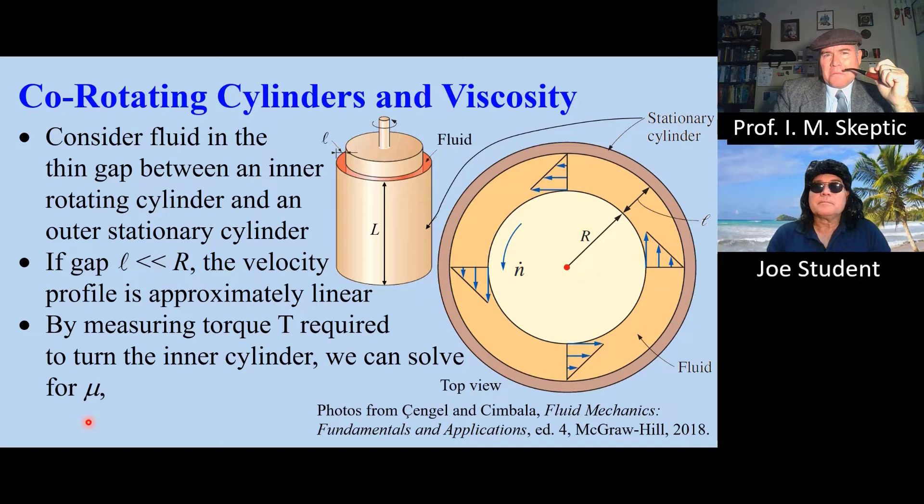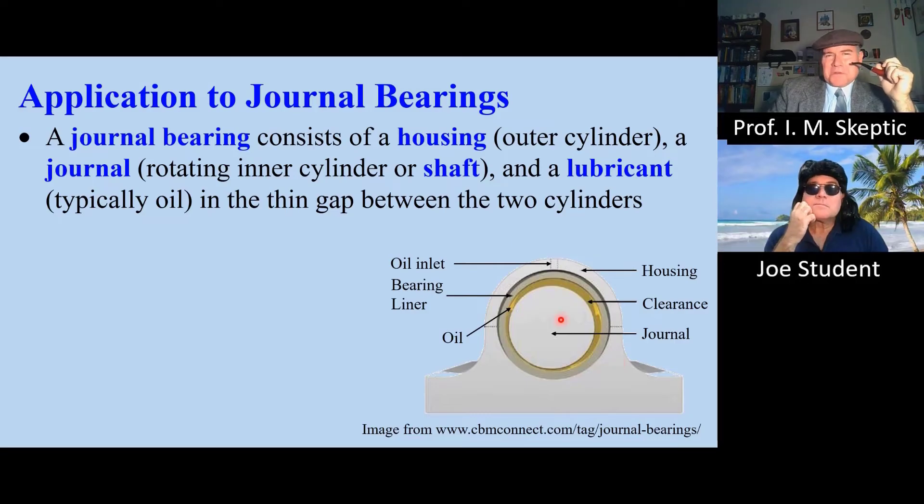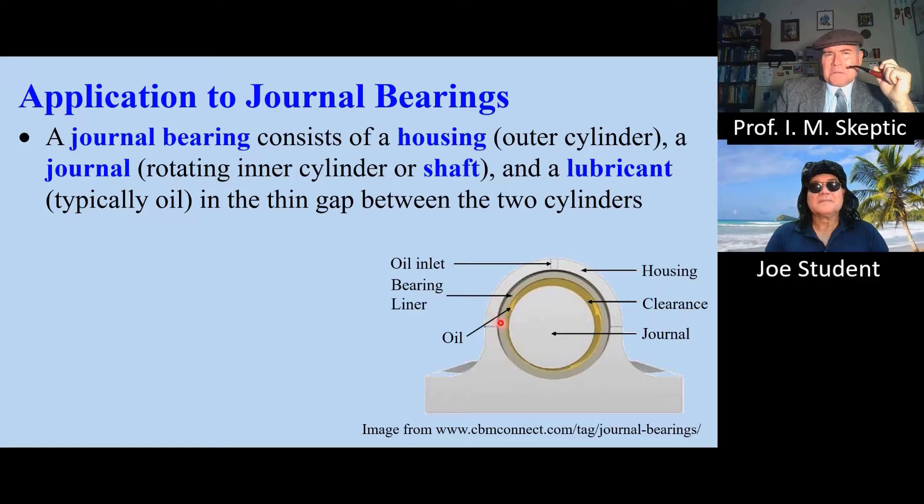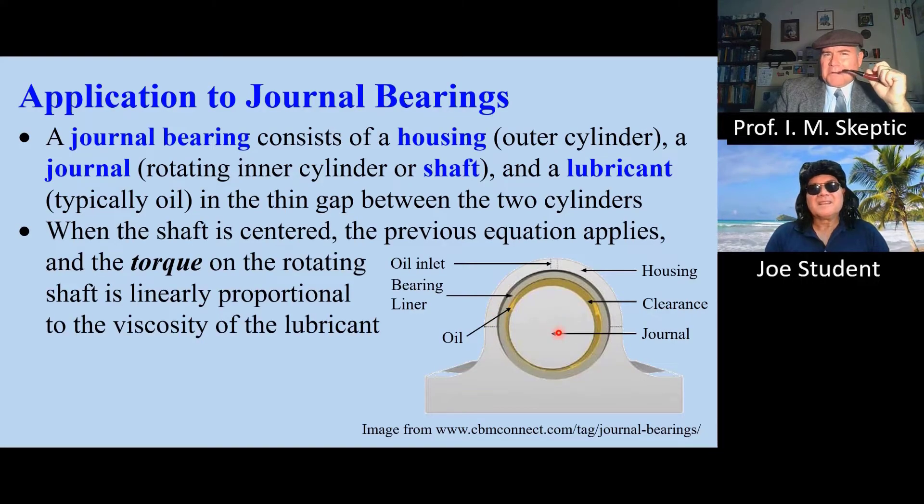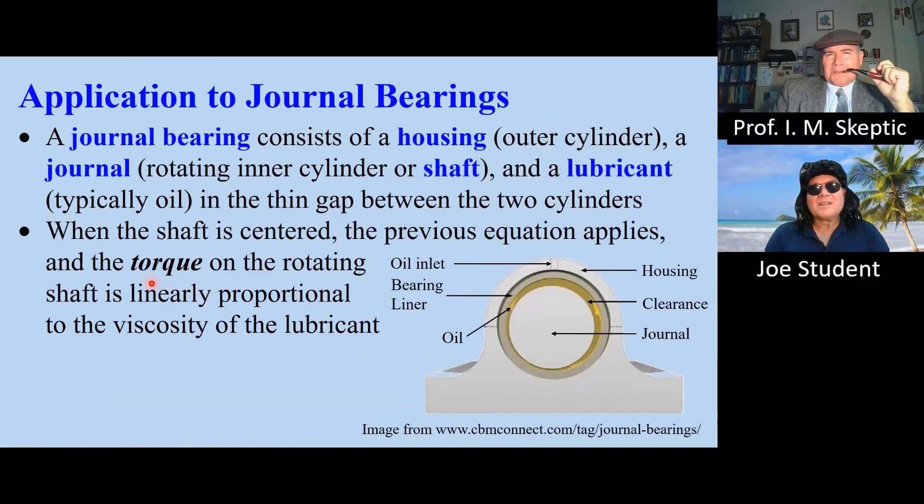We can measure the torque required to turn this inner cylinder at a constant RPM. Then we can solve for mu. We get mu proportional to torque. An important application is for journal bearings. A journal bearing consists of a housing, a journal, or a shaft, and a lubricant in the thin gap between the cylinders. When the shaft is centered, the previous equation still applies. We can solve this equation for torque. It turns out that the torque on the rotating shaft is linearly proportional to the viscosity of the lubricant.